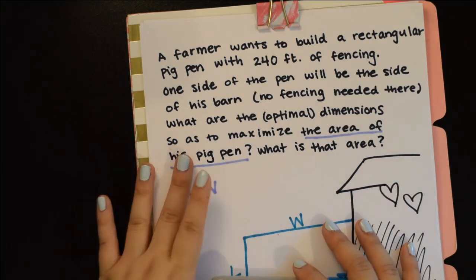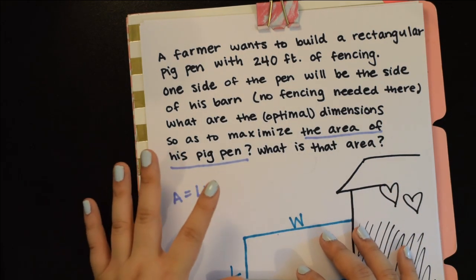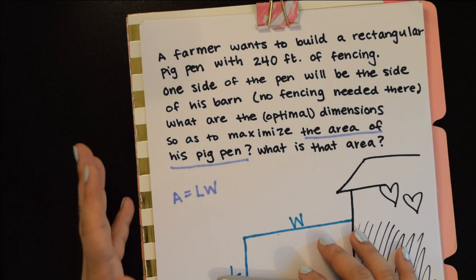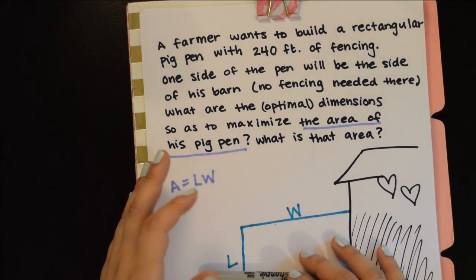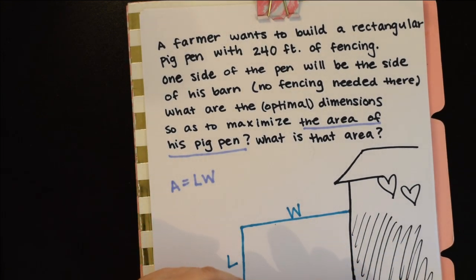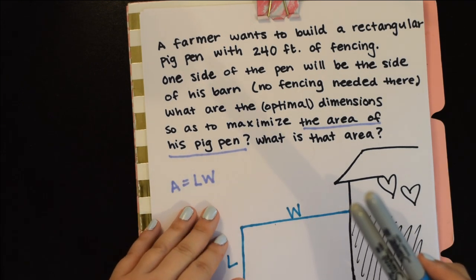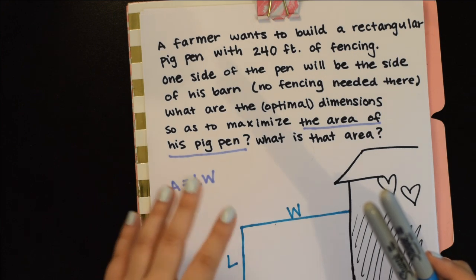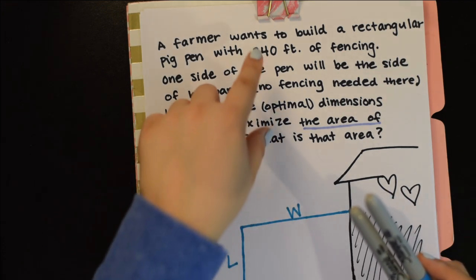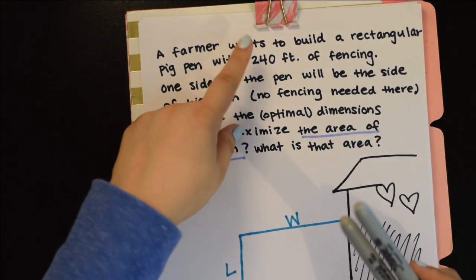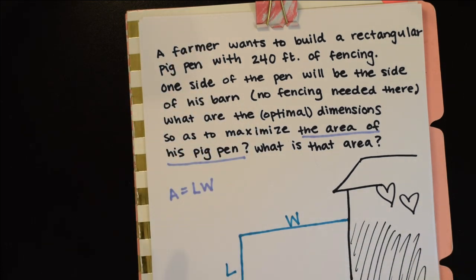Our goal is to take the derivative and set equal to zero, because that's where we're going to have our humps and bumps—that's where our critical points happen.